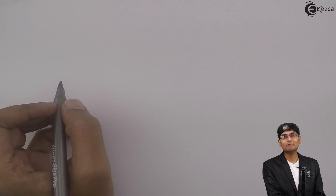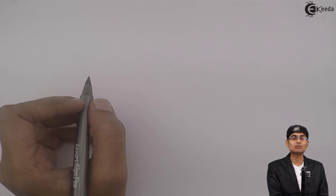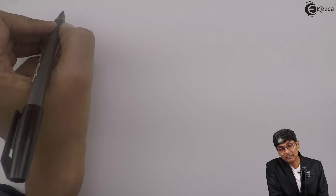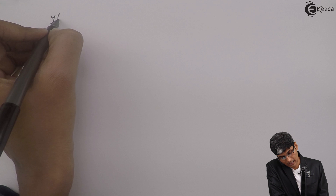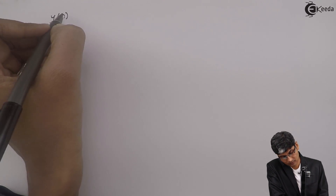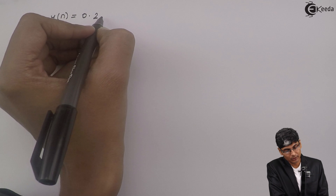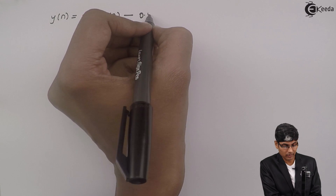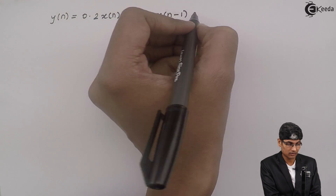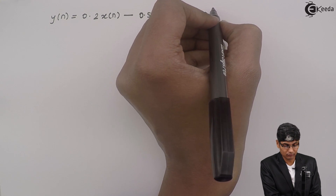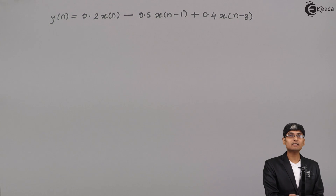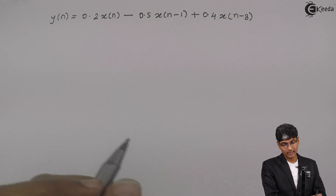Today we are going to see how an LTI system responds to a given input signal. Let us consider a system as y(n) = 0.2x(n) - 0.5x(n-1) + 0.4x(n-3). So let us consider that this is the given system.